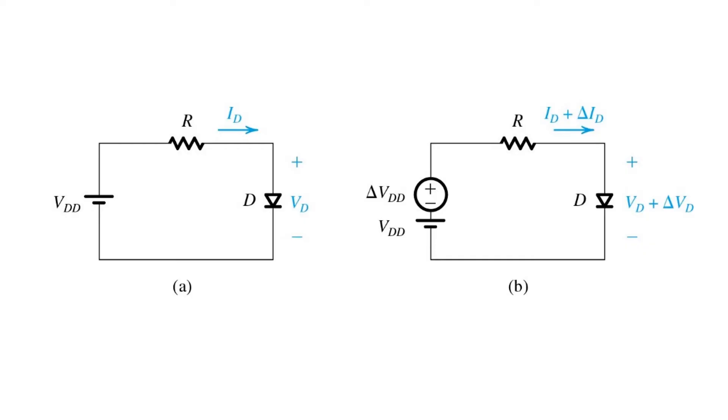Toward that end, we develop a small signal model for the diode. Here the word signal emphasizes that in general delta VDD can be a time varying quantity, and the qualifier small indicates that this diode model applies only when the increments are kept sufficiently small. We'll have to quantify how sufficient is defined shortly.